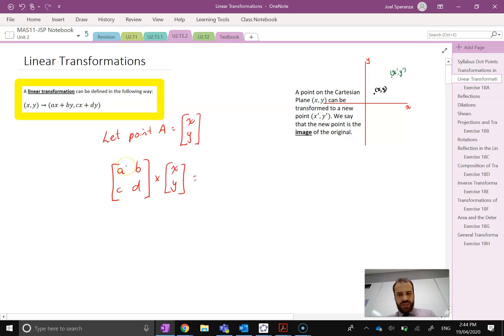Well I'm going to get a two by one matrix and it's going to be A times x plus B times y as my first element, and C times x plus D times y as my next element. And you can see that this is Ax + By, which is this point here, and this is Cx + Dy, which is my next element there.